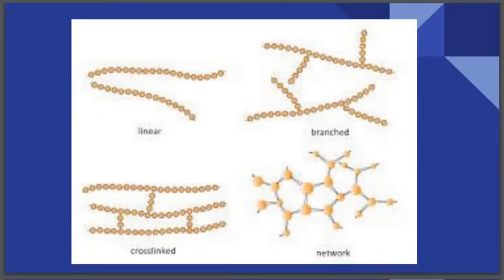Here you can see small beads which represent monomers combining together to form a polymer. This type of polymer is called a linear polymer. Another type is a branched polymer, followed by cross-linked polymers, and finally a network polymer.